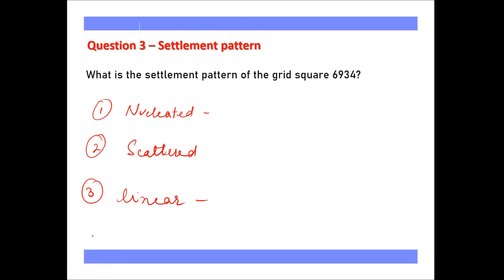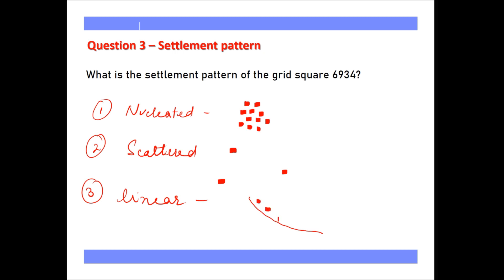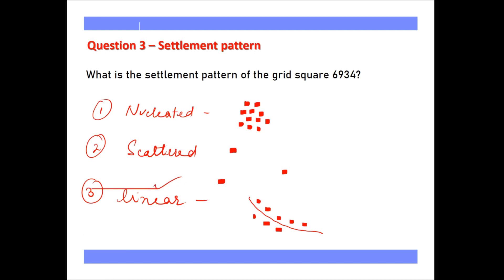In nucleated settlement pattern, the settlements are clustered at one place — this type is also called compact or clustered settlement pattern. In scattered settlement pattern, the settlements are far away from each other. In linear settlement pattern — linear means a line — the settlements follow a line, which can be beside a road or beside any river or stream.